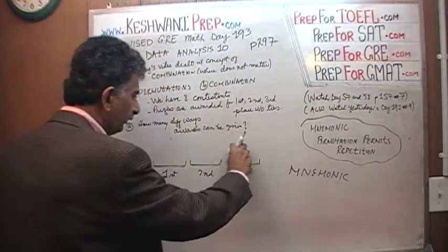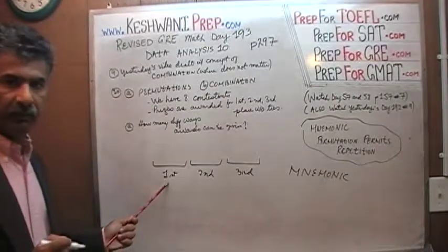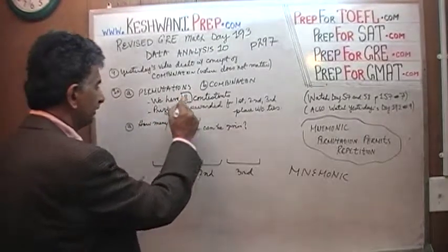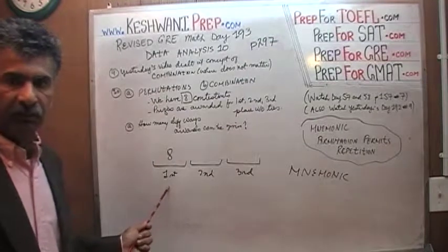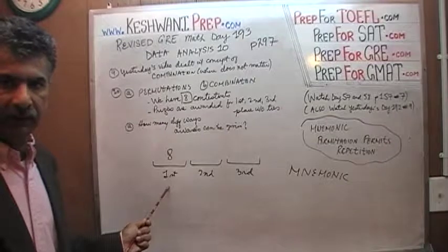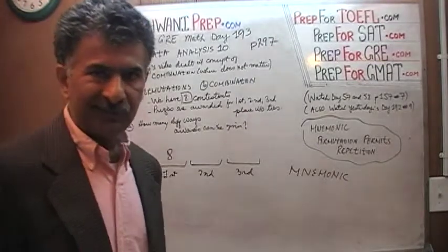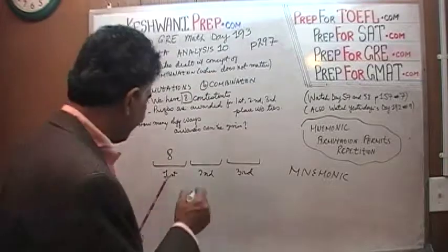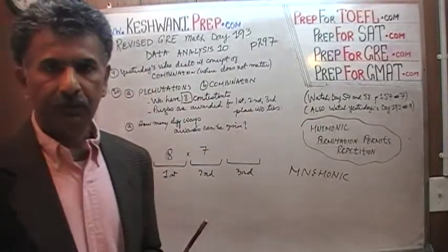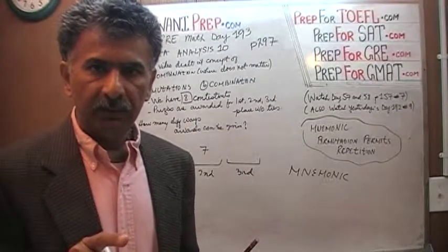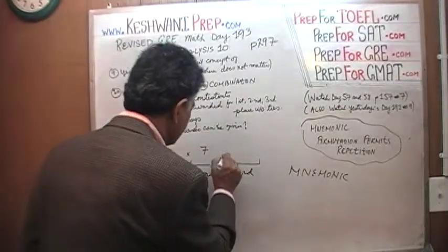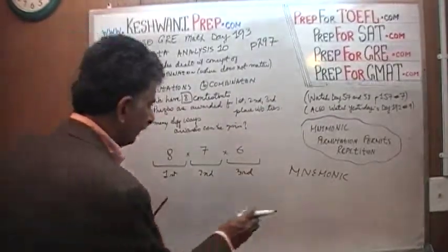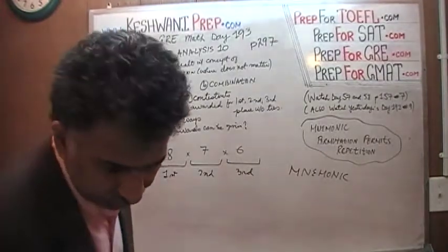Because how we arrange things matters, the question is: how many different ways can we put somebody in this spot? We have eight contestants, which means eight possibilities for first prize. Once first prize has been given, we have seven possibilities for second prize. Once first and second prizes are given, we have six people left. That's your answer: 8 times 7 times 6.